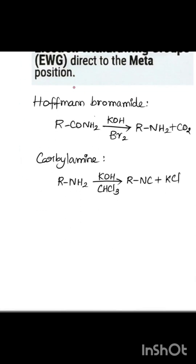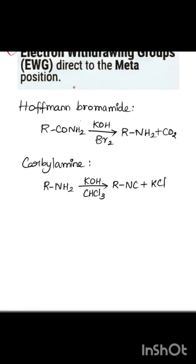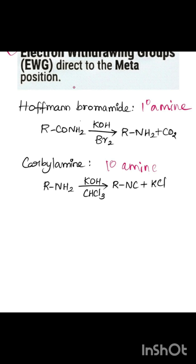The next category is the Hofmann rearrangement and Carbylamine reaction. In Hofmann, an amide (RCO-NH2) is converted to an amine; in Carbylamine, an amine is converted to isocyanide. Hofmann works only for primary amines and produces only primary amines. The reagents are similar: KOH with Br2 for Hofmann, and KOH with CHCl3 for Carbylamine.